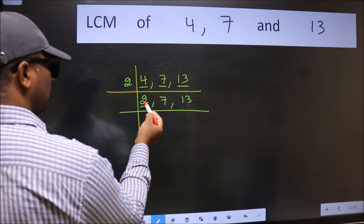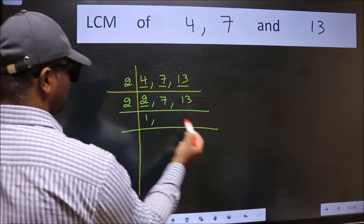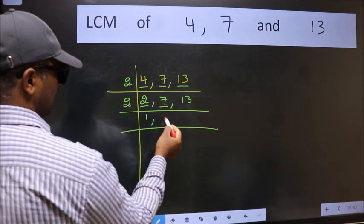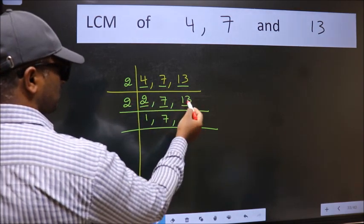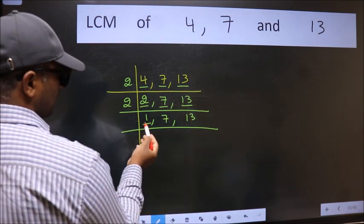Now we have 2. 2 is a prime number, so 2 divided by 2 is 1. The other numbers 7 and 13 are not divisible by 2, so we write them down as they are. Now we got 1 here.